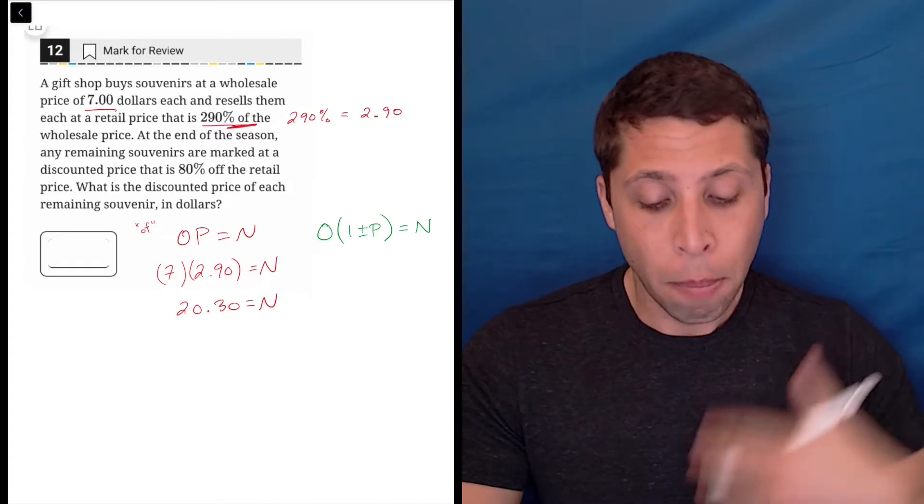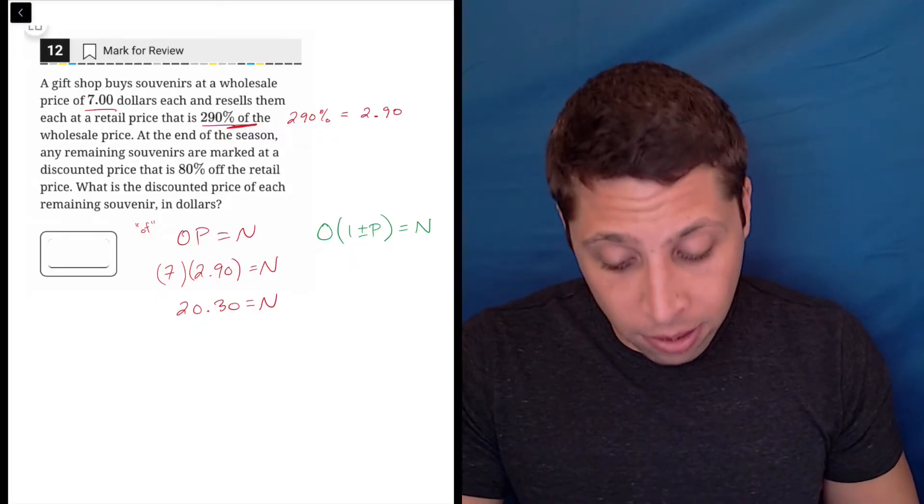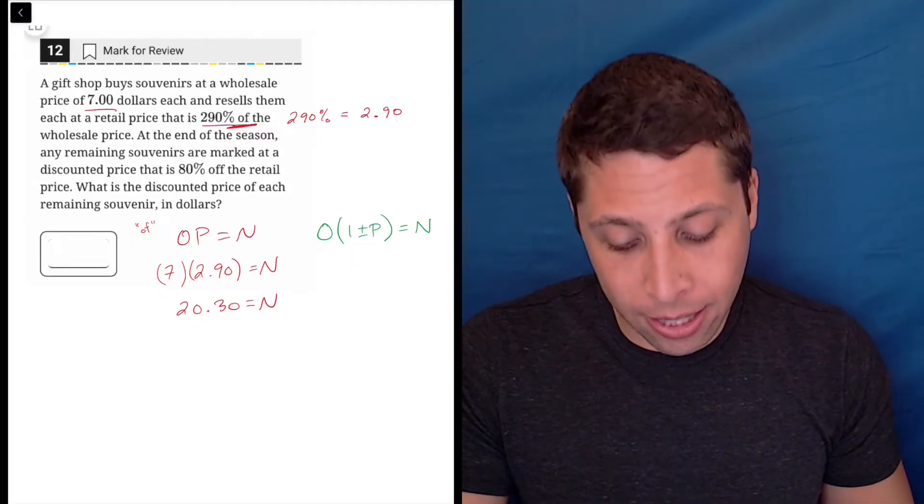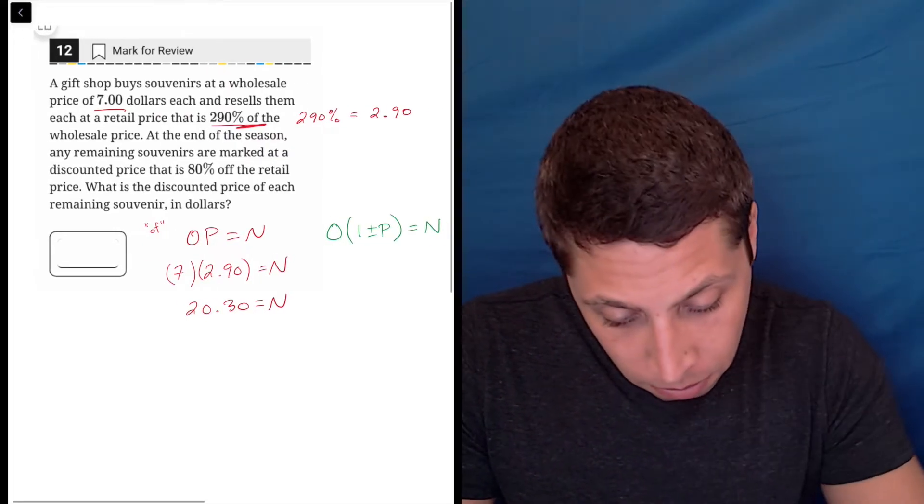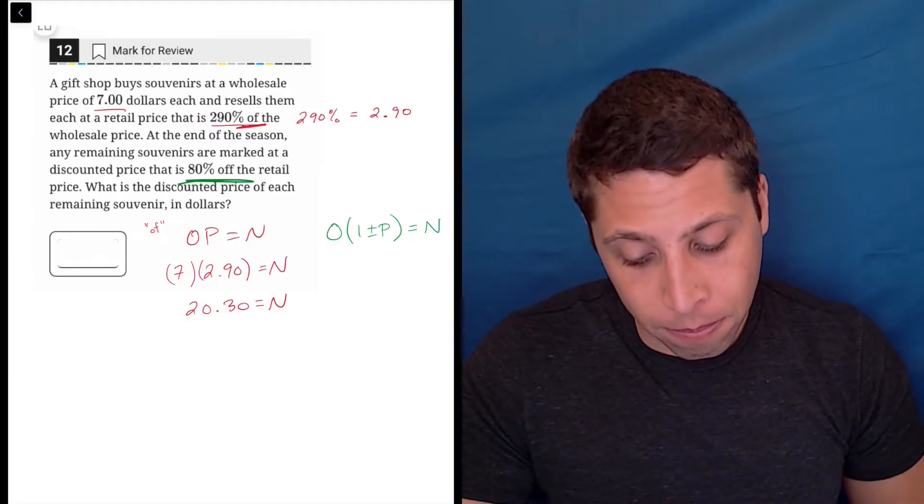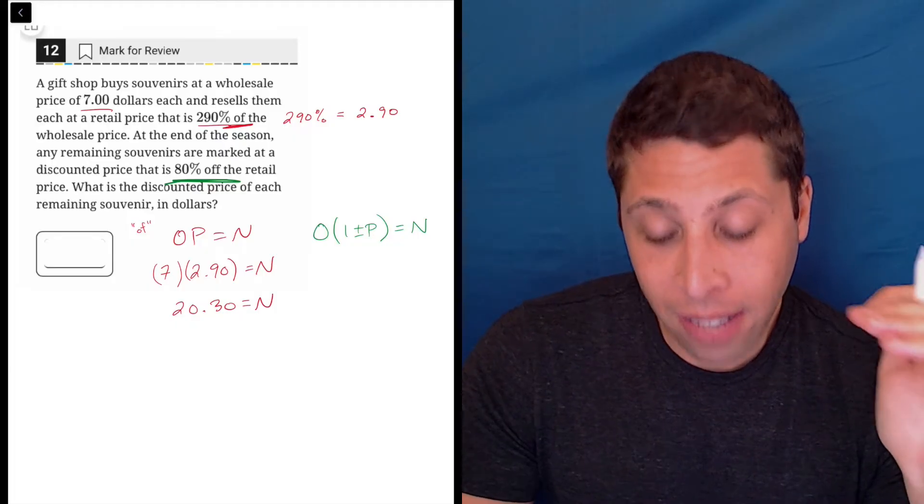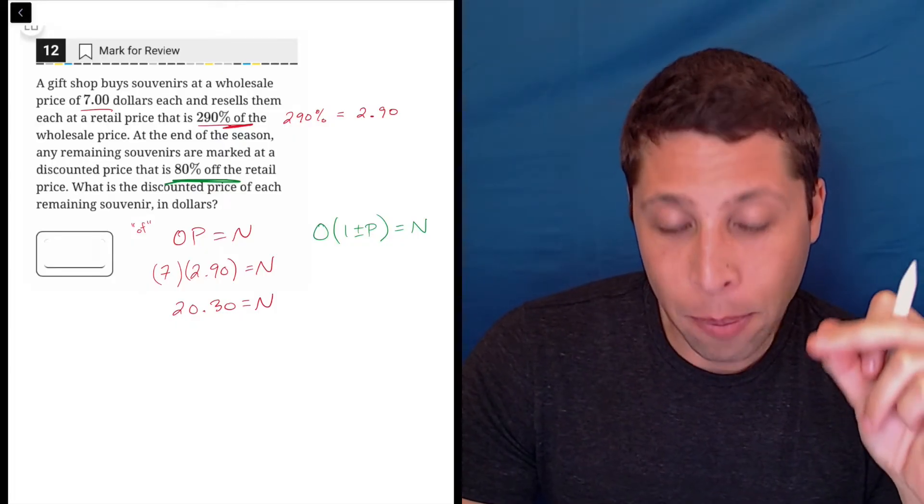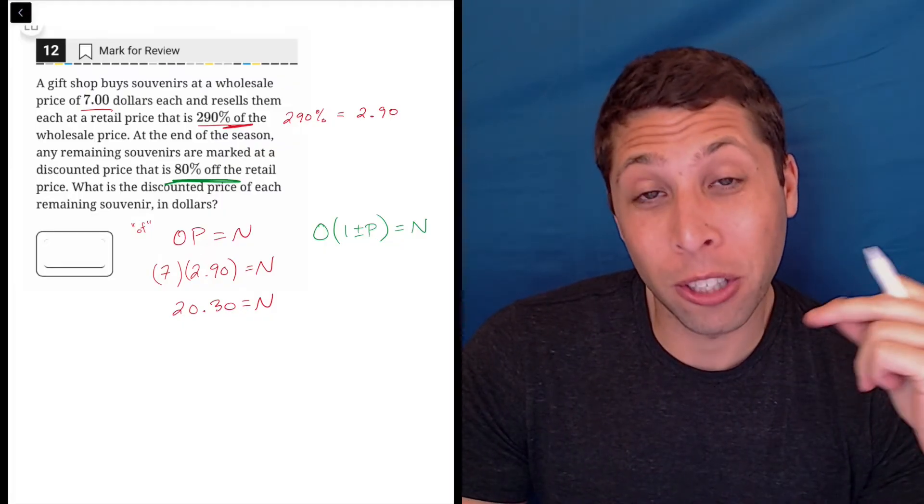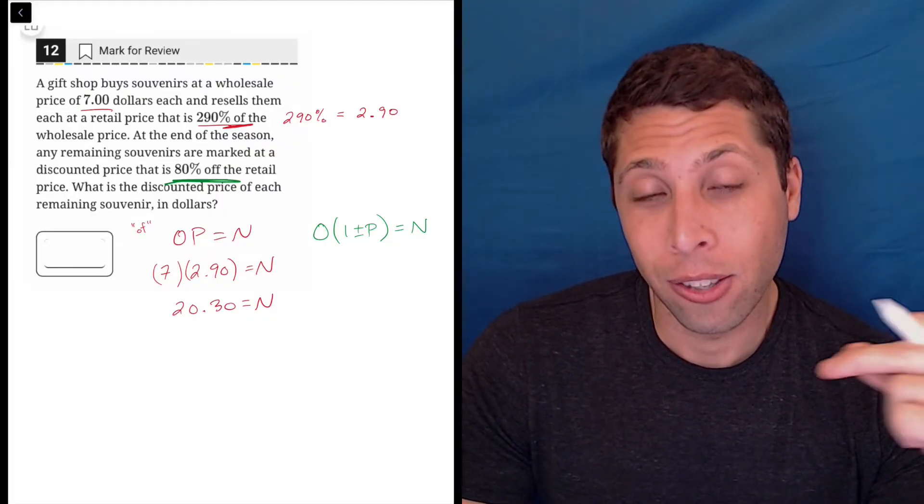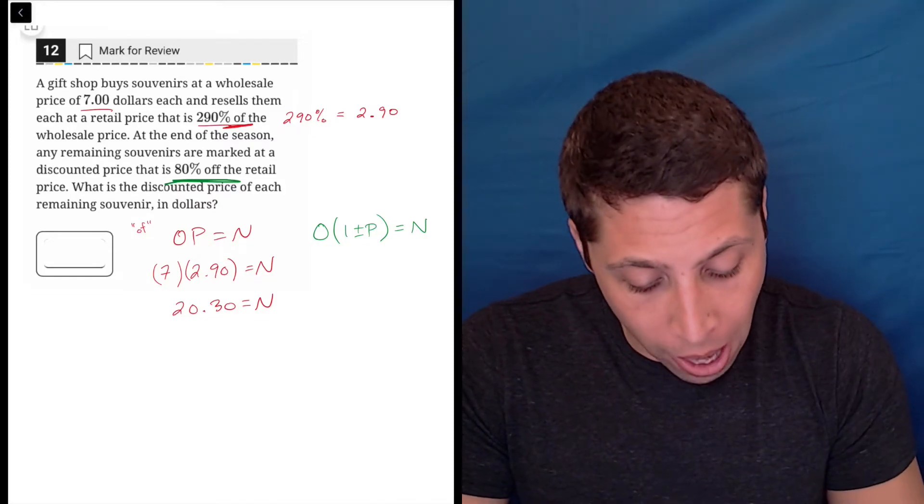But then we're doing another percentage to it. The next piece says at the end of the season, any remaining souvenirs are marked at a discounted price that is 80% off the retail price. Now this is where we need to use the percent change formula, because it's not saying that it's 80% of the retail price. It's 80% off. We are taking 80% away. So our percentage needs to reflect that.